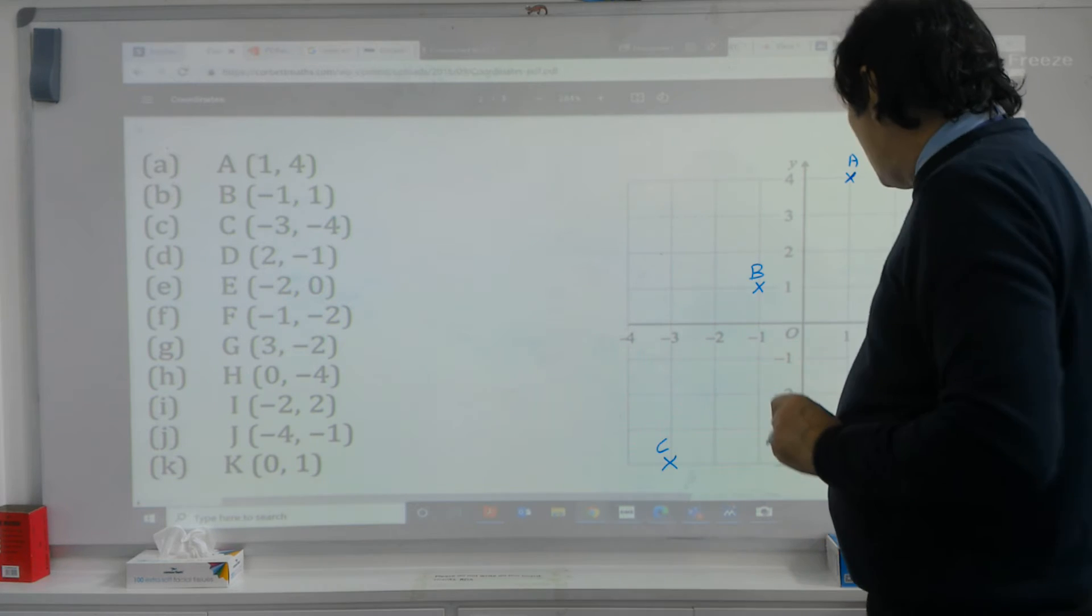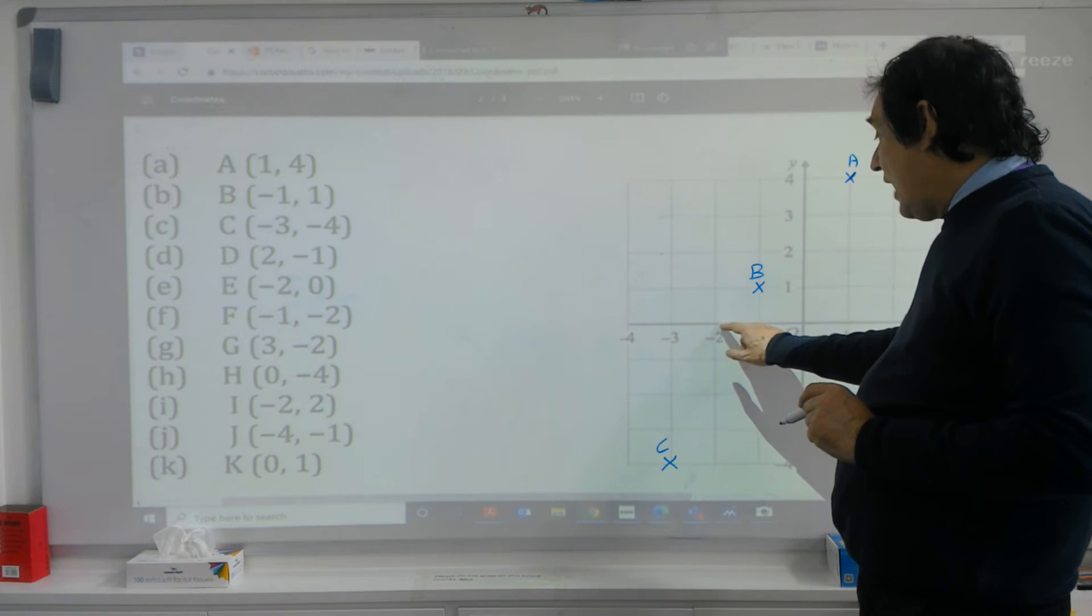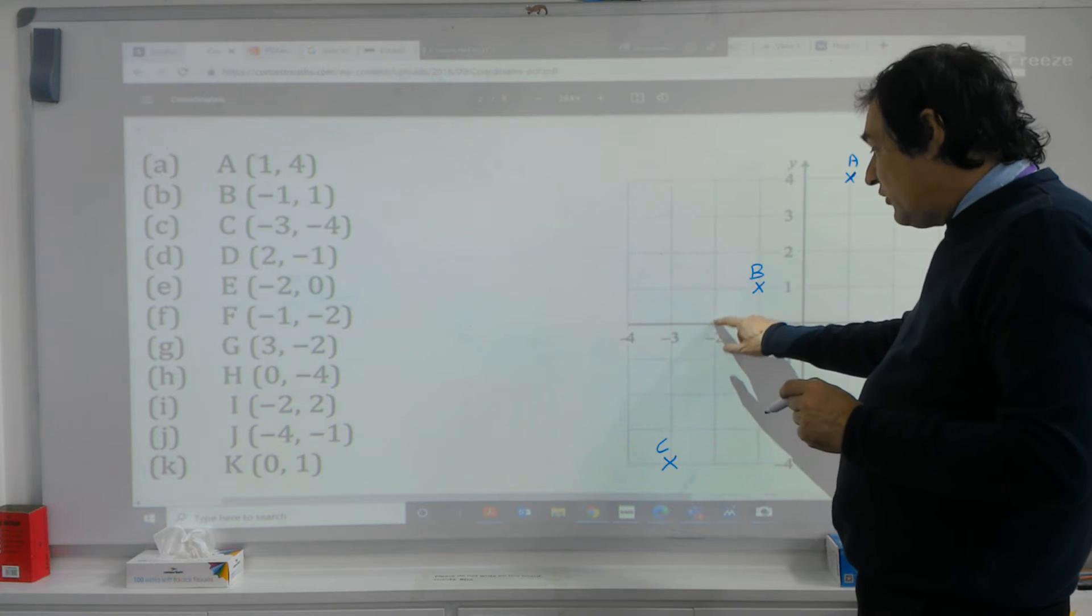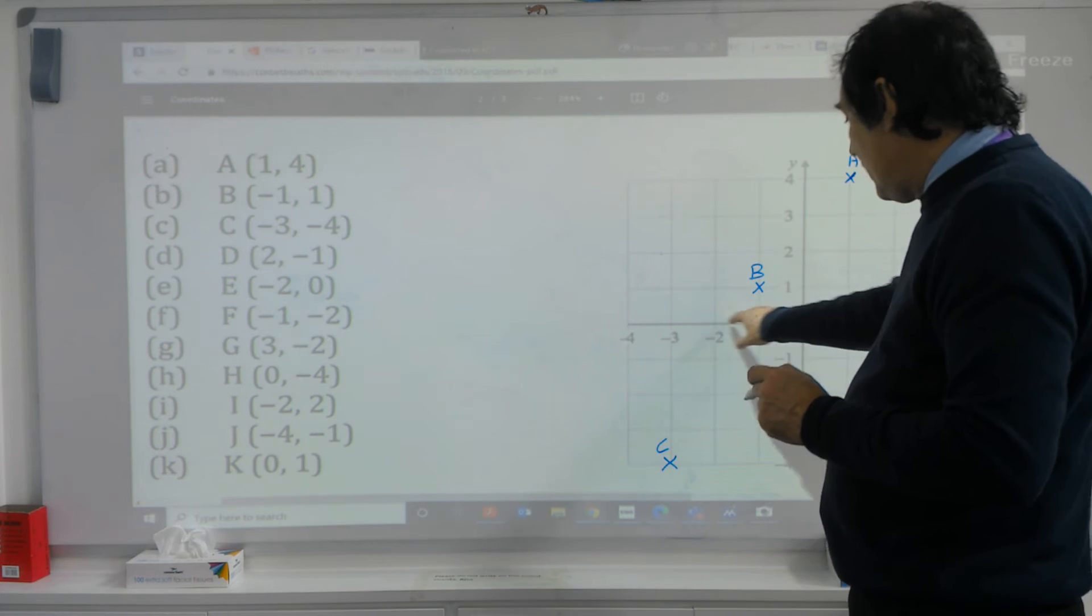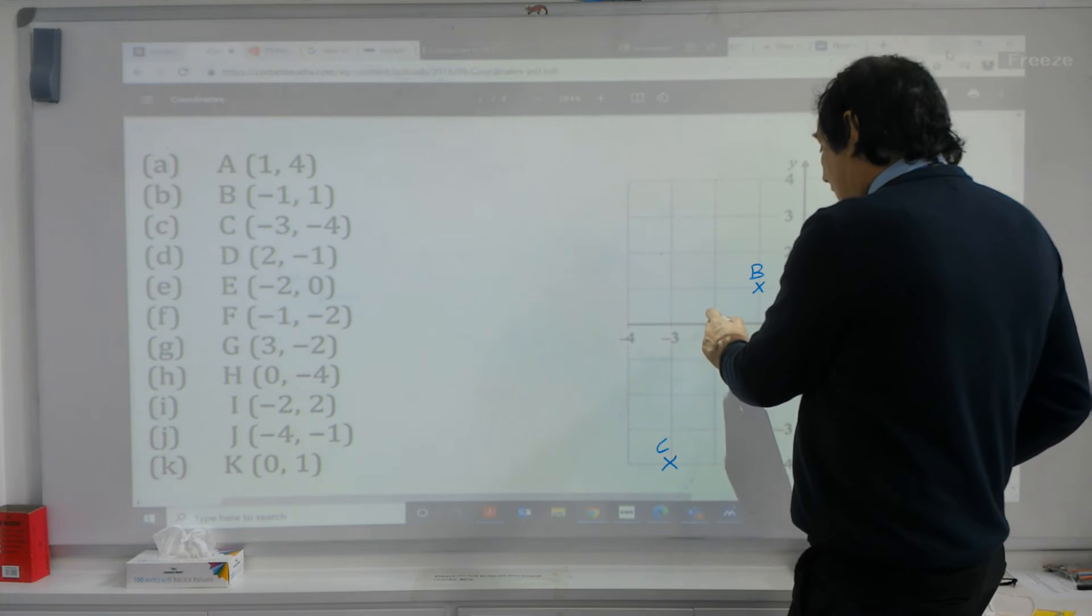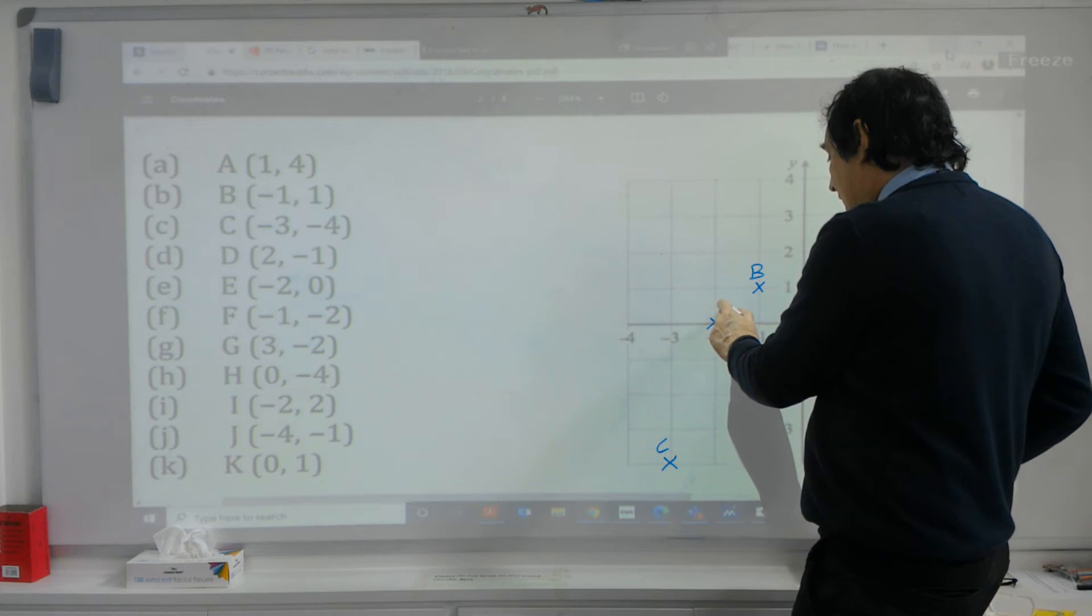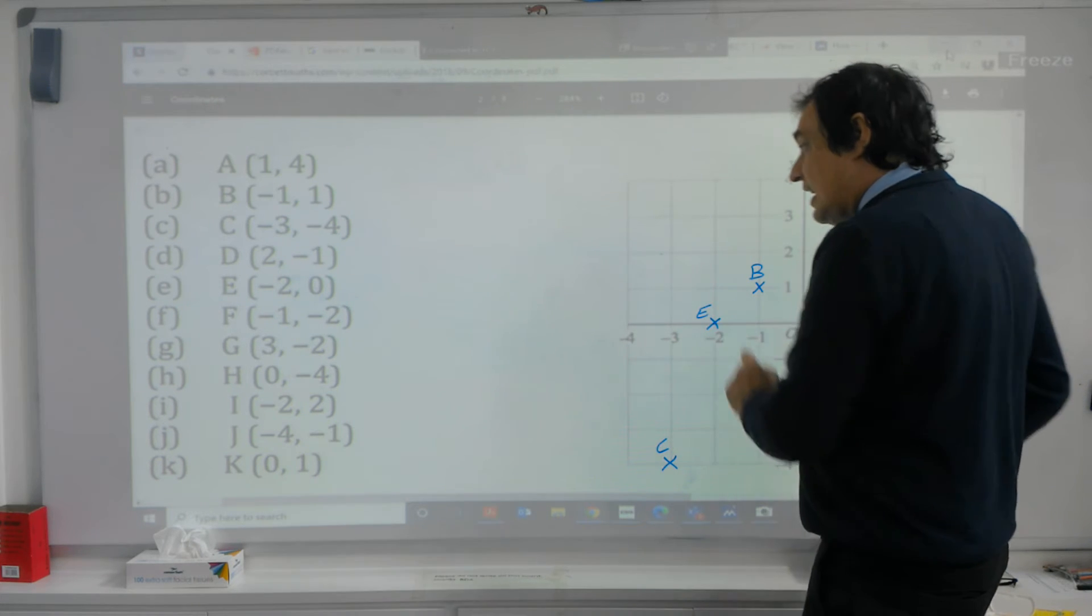E then, we're going to go minus two and naught. So naught means you don't go up or down from that line. So we've got to cross our minus two, our first number, and so it sits on the line there, and we mark it with the letter E.